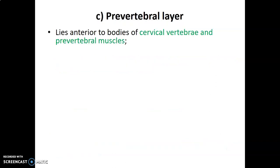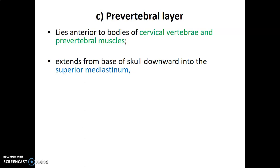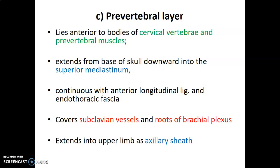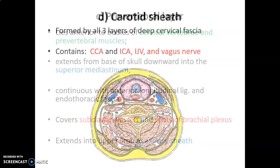The prevertebral layer is fascia that covers the cervical vertebra with its associated prevertebral muscles such as longus colli. This prevertebral layer extends from the base of the skull downwards through the neck to the superior mediastinum, so it also extends into the thoracic cavity — again a potential pathway for the spread of infection. The prevertebral layer is continuous with the anterior longitudinal ligament on the anterior aspect of vertebral bodies and also with the endothoracic fascia. Importantly, the prevertebral fascia covers the subclavian vessels and roots of the brachial plexus, and as it extends to the upper limb it forms the axillary sheath.